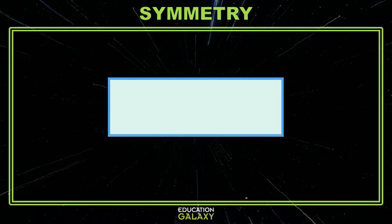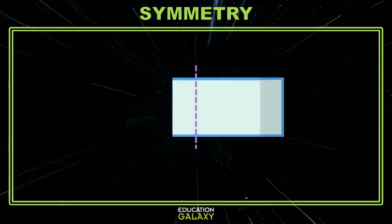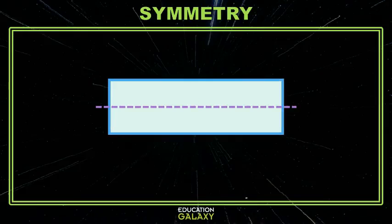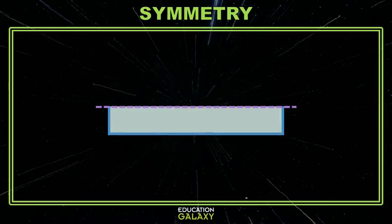What about this rectangle? Does it have lines of symmetry? Let's check. Let's fold down the center here. Those match. There is one line of symmetry. How about this way? Those match. Another line of symmetry.